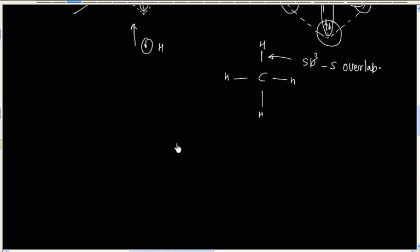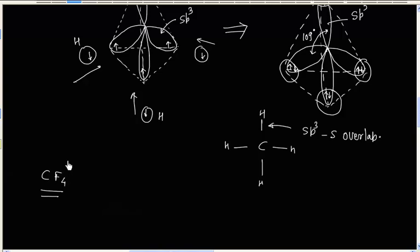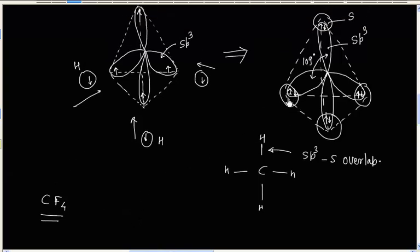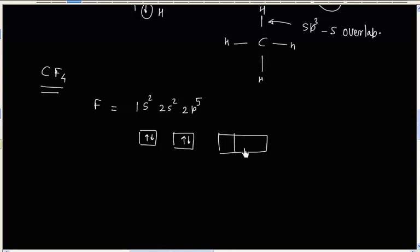Similarly, we can show the formation of CF4 molecule. Everything will remain the same. In the case of fluorine, we will have a p orbital involved. If you see the electronic configuration of fluorine: 1s2, 2s2, 2p5. From the box diagram, we have 1 unpaired electron in the p atomic orbital.